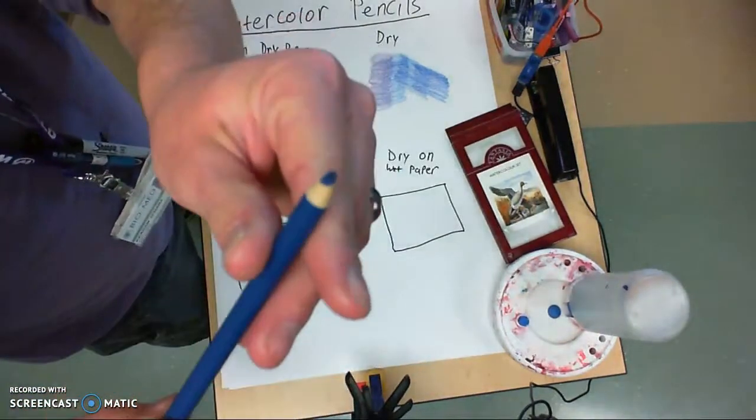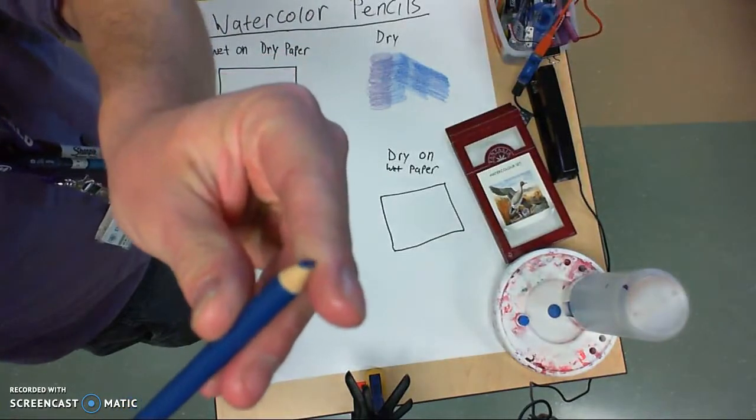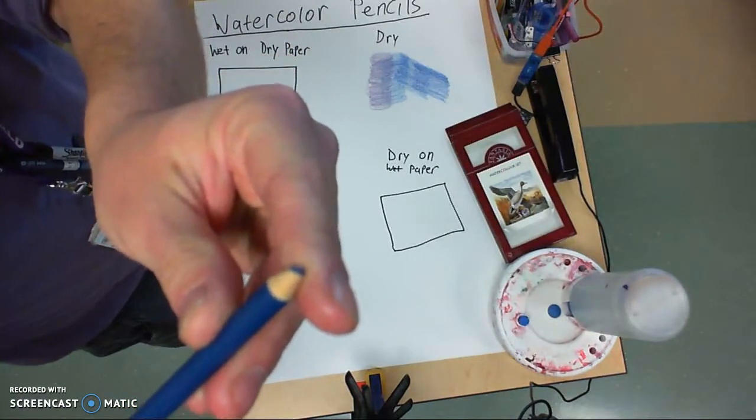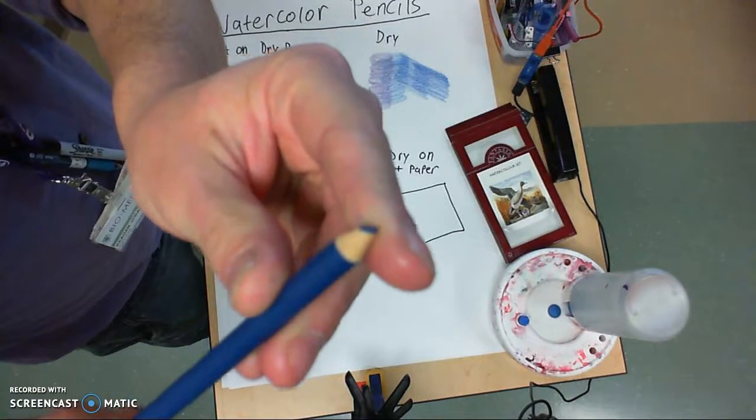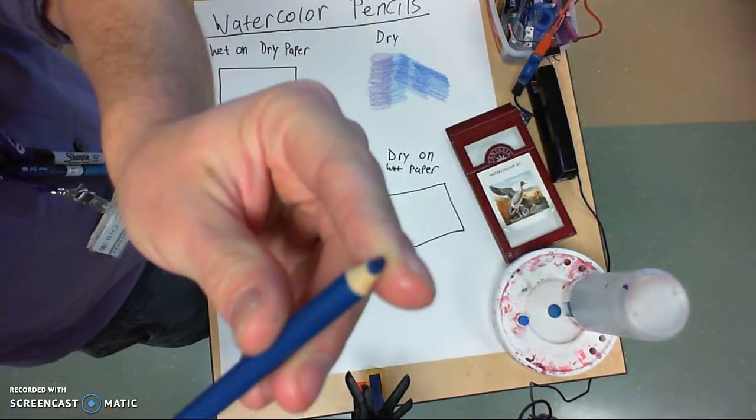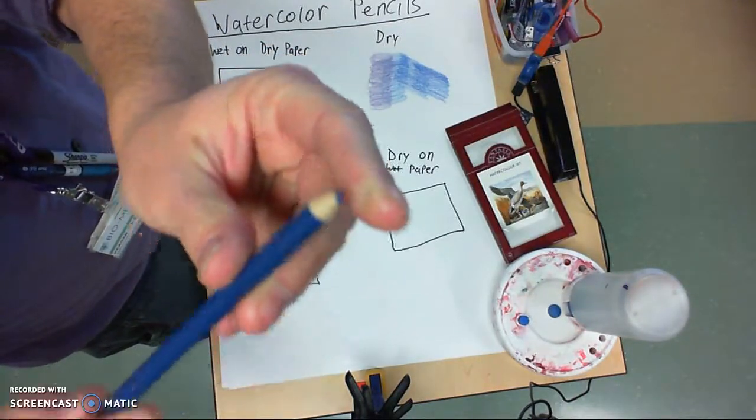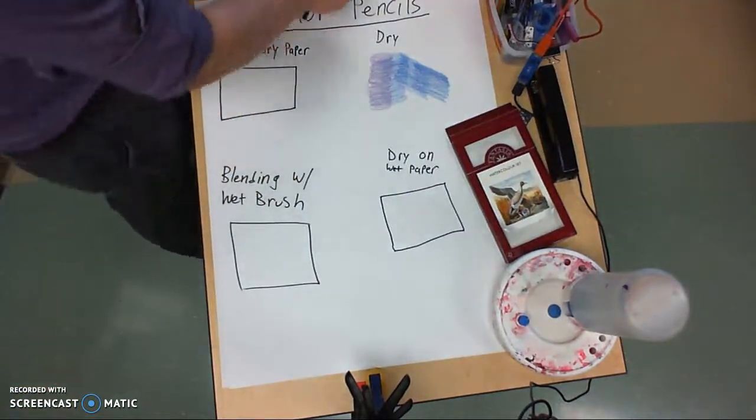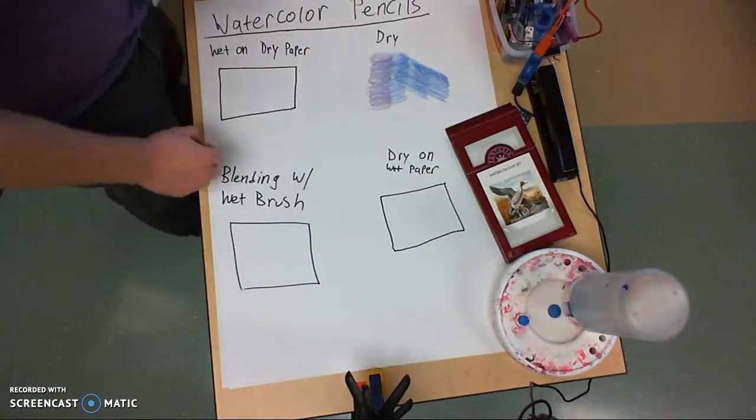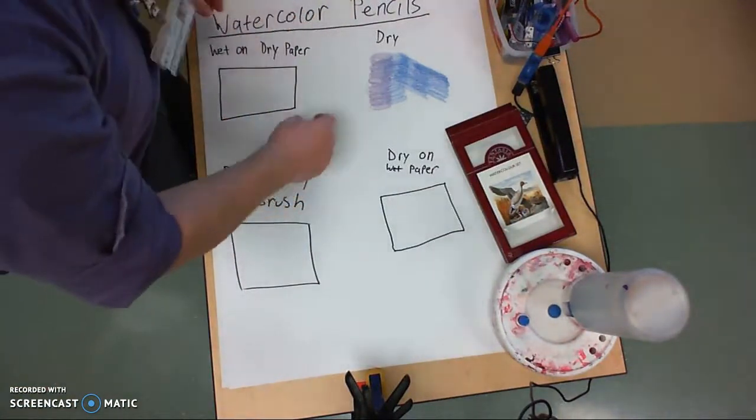I'll hold the tip of the pencil here up so you can see how much I've worn down that watercolor pencil just with a little bit of coloring. I've worn it down pretty significantly. Watercolor pencils are very soft. So you always want to make sure that you blend in a circle.